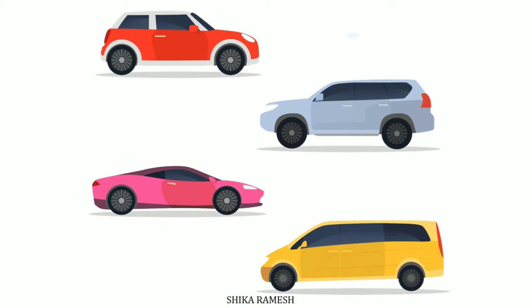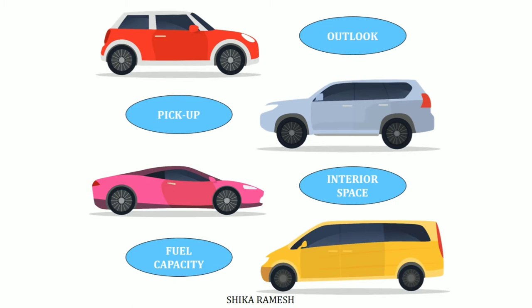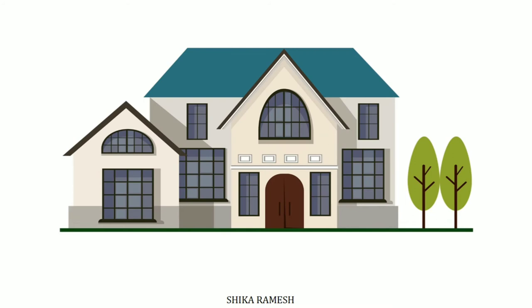For example, consider the attributes of a car. There are different types of cars with different features such as a car's outlook, its pickup, interior spacing, and fuel capacity. When a person thinks about buying a car, the first thing that comes to his mind is the features of the cars — what should the outlook be, how much its pickup should be, what should the interior spacing be (like whether it should be a four-seater or a six-seater), the fuel capacity, and the color. All these attributes are taken into account by the person buying the car.